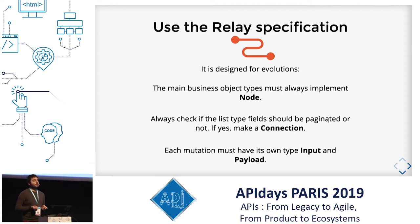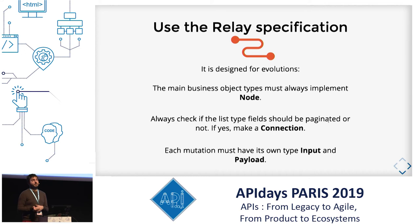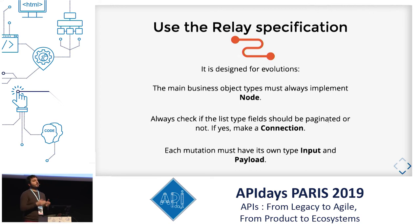The third Relay specification is: each mutation should have its own input and payload type. We might think we can share a type between add and update mutations since it's the same data. But if one year later you need to add a field to the create mutation but not the update mutation, you will have to do a breaking change. So if you always use a specific input and a specific payload for each mutation, you prevent yourself from this problem.